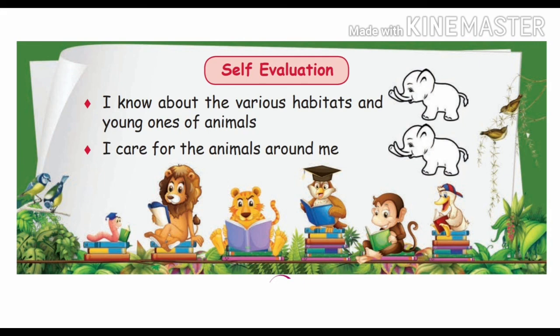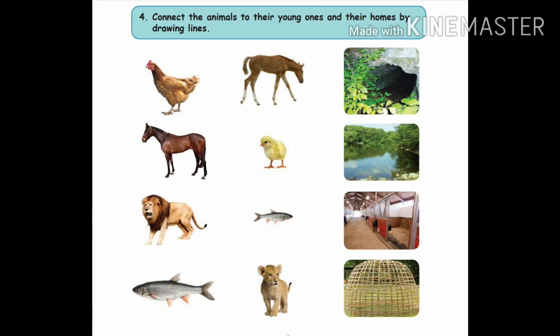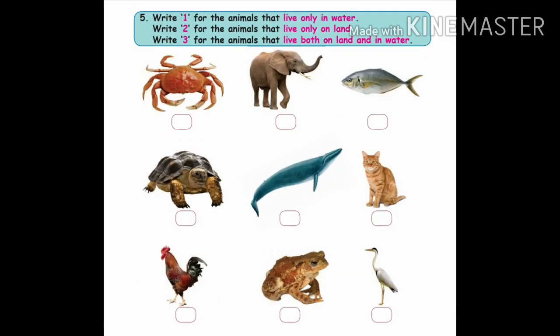Self-evaluation: I know about the various habitats and young ones of animals. I care for the animals around me. Assignment: Connect the animals to their young ones and their homes by drawing lines. Write 1 for animals that live only in water, 2 for animals that live only on land, and 3 for animals that live both on land and in water.